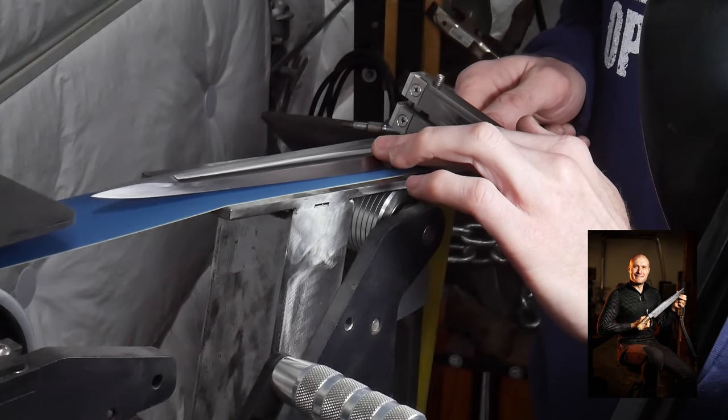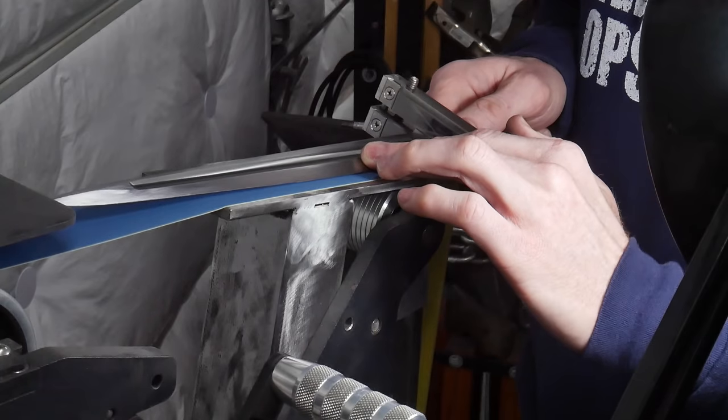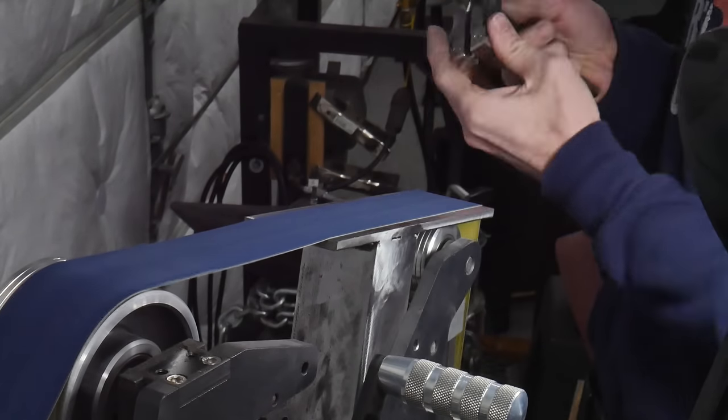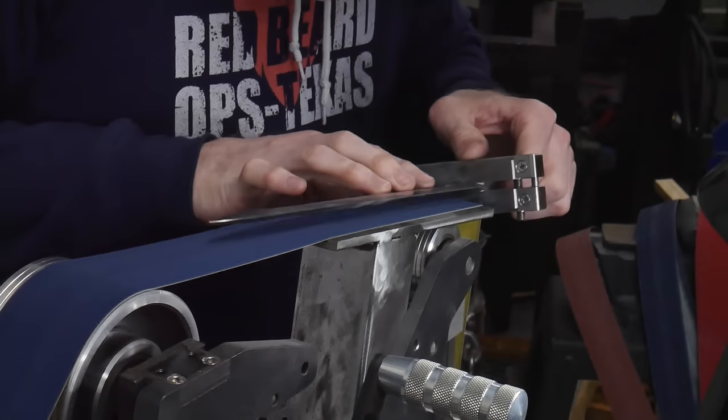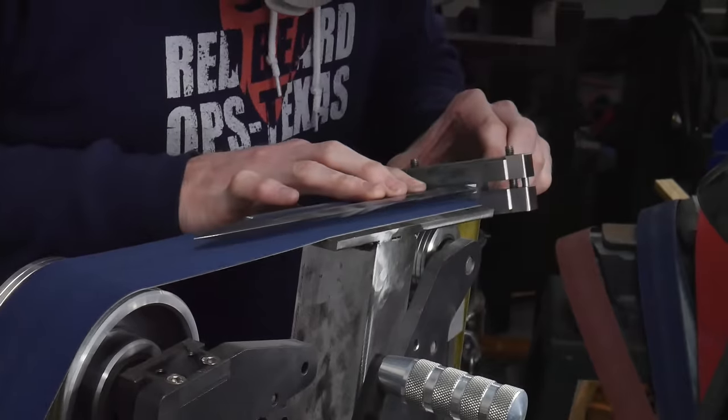I started using a waterfall platen after watching Master Smith Kyle Royer, and it's done pretty good for me. I really need to order some Trizact JFlex belts to try out on it, since the belt bump with the aluminum oxide JFlex belts can be a pain to deal with. With the little bevels on the dagger, it was a bit of a challenge to index the knife onto the platen, but with some patience I got the job done.